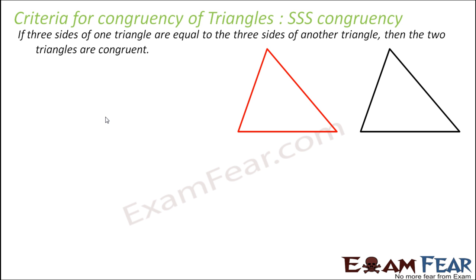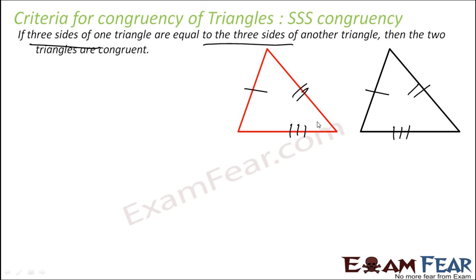So let us study SSS — Side, Side, Side congruency. That means if the three sides of one triangle are equal to the three sides of another triangle, then the triangles are congruent. If this side equals this side, this equals this, and this equals this, then these two triangles are congruent.